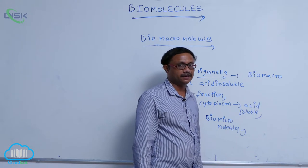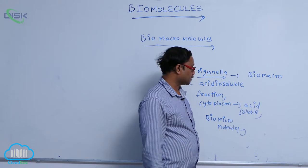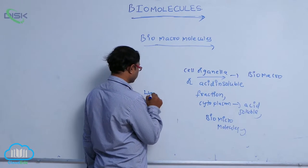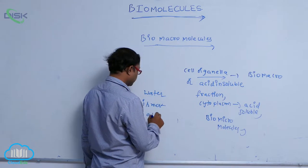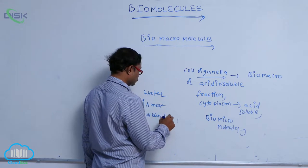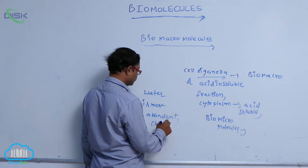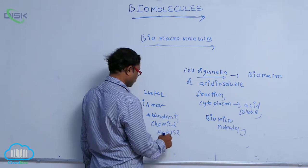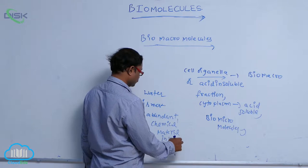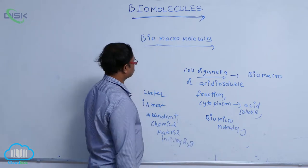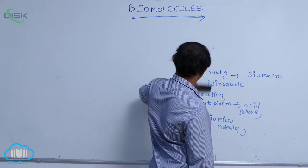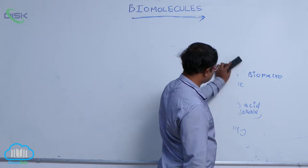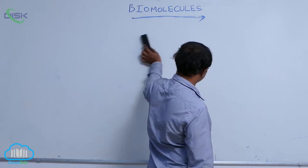The most abundant chemical material in the atmosphere and in living organisms is water. Water is the most abundant chemical material in living organisms, and after that come the bio macromolecules.